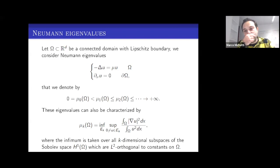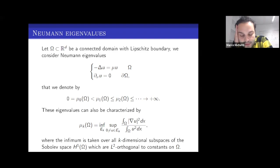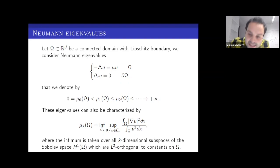The Neumann eigenvalues also have a variational characterization — a way of computing the eigenvalue via a variational method. The k-th eigenvalue can be computed as the infimum over A_k of the supremum of the Rayleigh quotient, which is the ratio between the L2 norm of the gradient and the L2 norm of the function. The infimum is taken over all k-dimensional subspaces of the Sobolev space H1, where functions are assumed to be L2 orthogonal to constants on omega — that is, their mean on omega is zero.